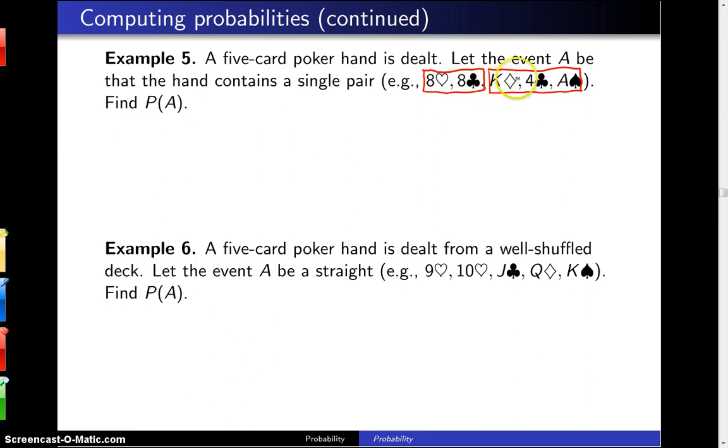So in this case, the king, four, and ace round out the hand. We're trying to figure out the probability of dealing such a hand, so that is P of A.